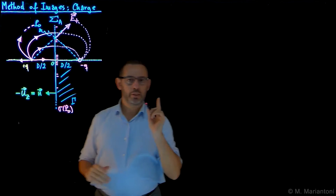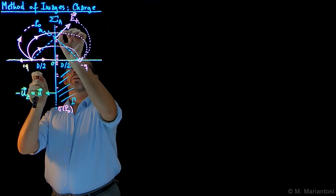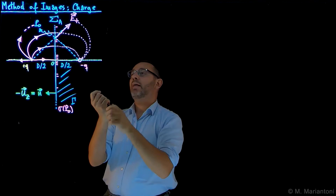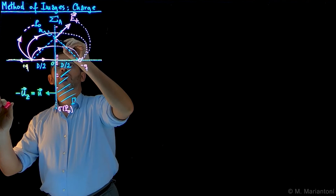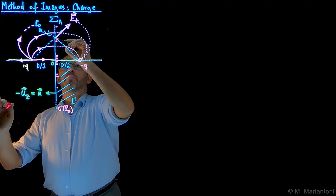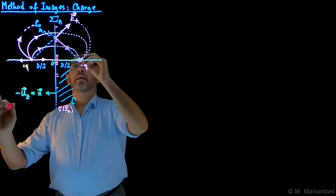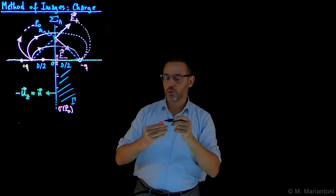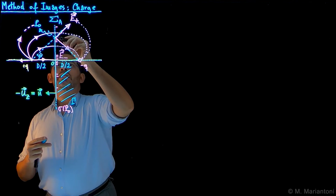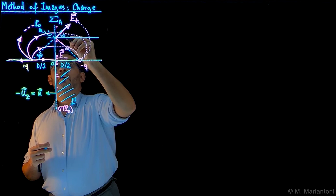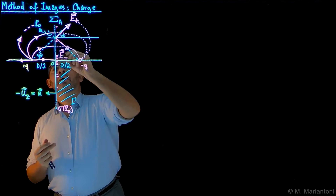Using Coulomb's law, we can sketch the vector field E at point capital P naught. The field due to plus q points in this direction, and the field generated by minus q also points in this direction toward minus q. We call this angle theta — so this angle here is also theta. We call this distance small r. To understand what r is, let us continue our sketch: this eventually will be our z-axis.